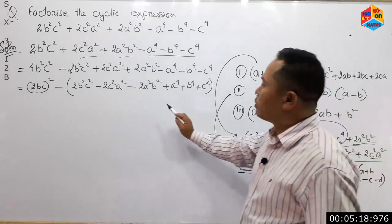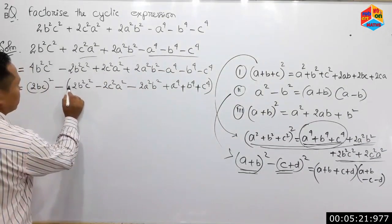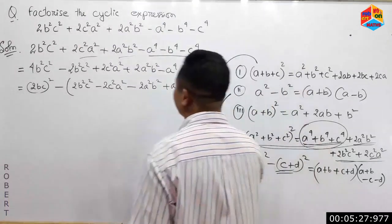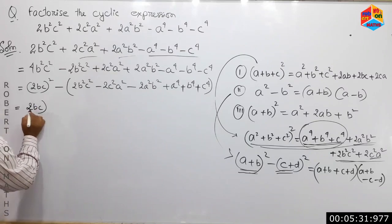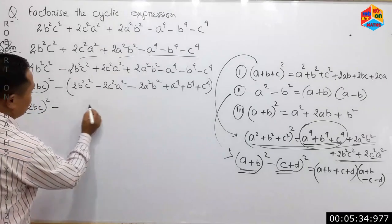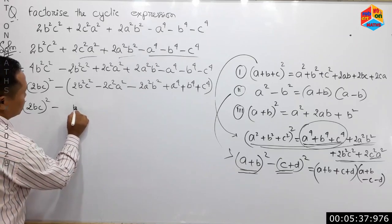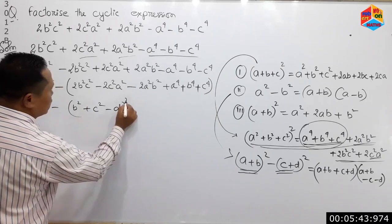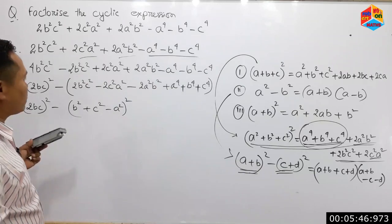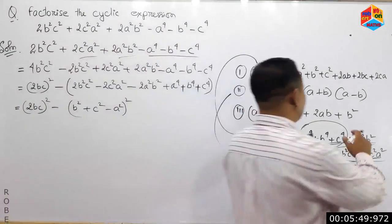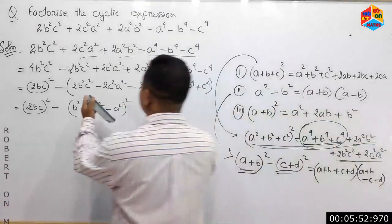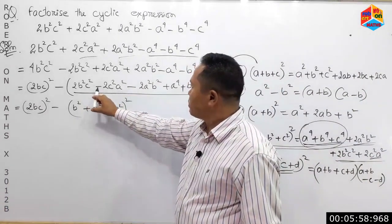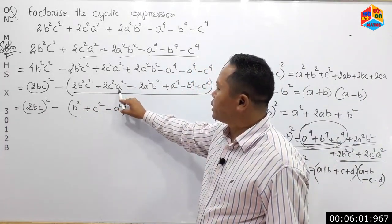So we have 2bc whole square, and we have 2bc whole square, and we have 2b squared plus c squared minus a squared, whole square. So we need minus one.